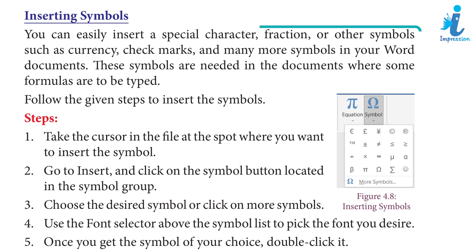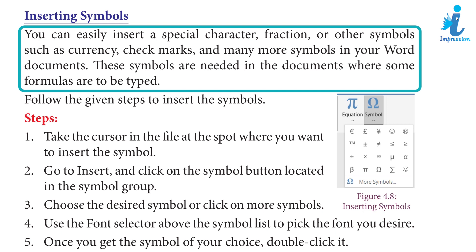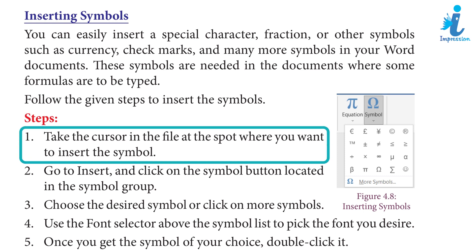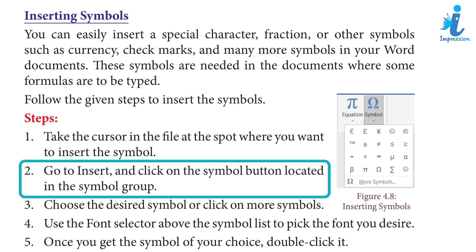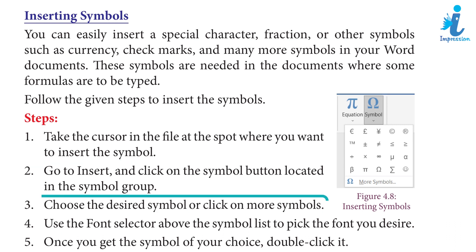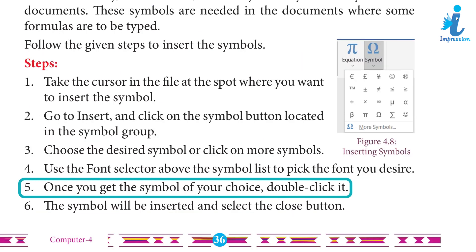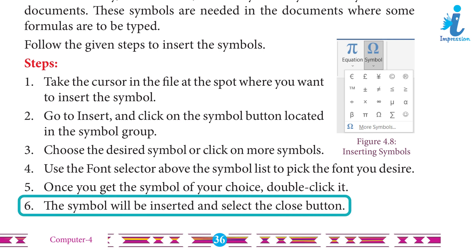Inserting Symbols: You can easily insert a special character, fraction or other symbols such as currency, check marks and many more symbols in your Word documents. These symbols are needed in documents where some formulas are to be typed. Follow the given steps to insert symbols. Step 1: Take the cursor to the spot where you want to insert the symbol. Step 2: Go to Insert and click on the Symbol button located in the Symbol group. Step 3: Choose the desired symbol or click on More Symbols. Step 4: Use the font selector above the symbol list to pick the font you desire. Step 5: Once you get the symbol of your choice, double-click it. Step 6: The symbol will be inserted; then select the Close button.